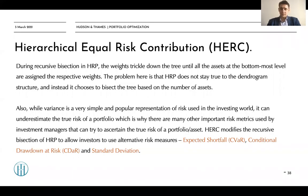As we have previously discussed, during recursive bisection in HRP, the weights trickle down the tree until all the assets at the bottom-most level are assigned their respective weights. The problem is that HRP does not stay true to the dendrogram structure and instead chooses to bisect the tree based on the number of assets, so it does not follow the true form of the dendrogram.